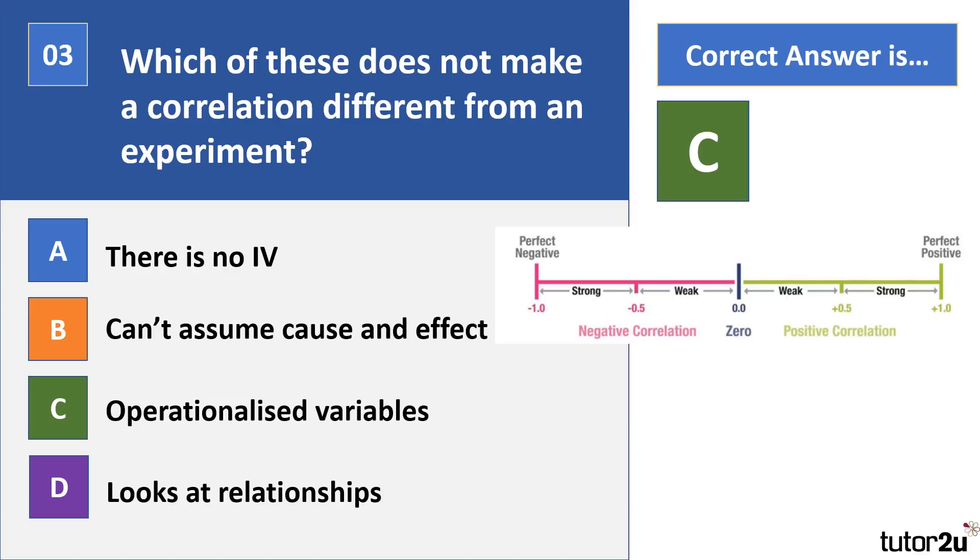Now within correlations as well, there's an important thing you need to know which is called a coefficient. A coefficient is a value between minus one and plus one, and it shows the strength of a correlation. Plus one is a perfect positive correlation, minus one is a perfect negative correlation. One of the questions with correlations to think about is, if they only ever show us relationships, then why do we bother using them?